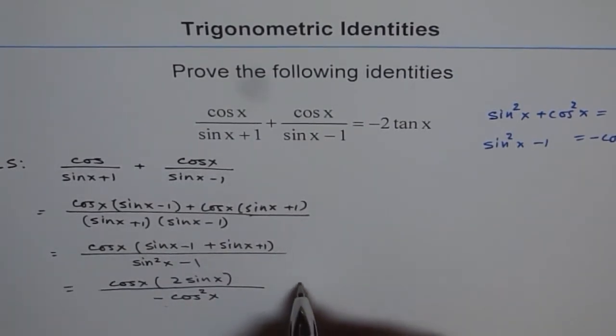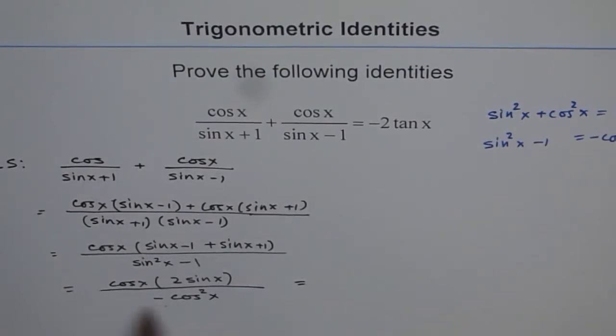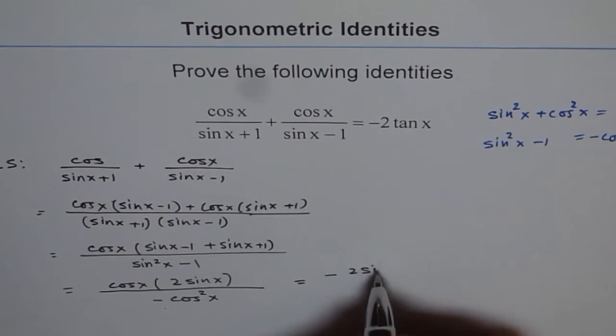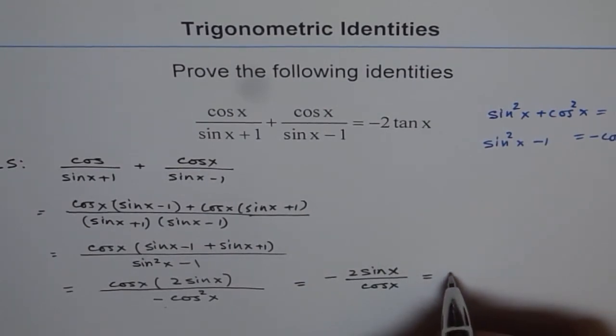Now this can be written so that cos x and cos x will cancel. We have the negative sign, so we get negative 2 sin x over cos x, which equals negative 2 tan x.